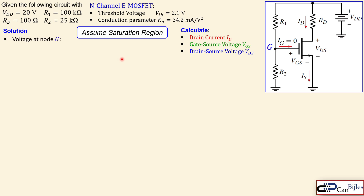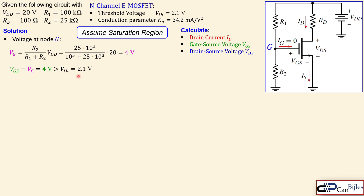Let's look at the solutions. We start with the simplest one: the voltage at node G, using the voltage divider rule with VDD. That gives R2 over (R1 + R2) times VDD, which substituting the given values equals 4 volts. Since the source is at ground, VGS also equals VG, so VGS is 4 volts. We check the first condition: VGS must be larger than VTH (2.1 V) — which is satisfied.